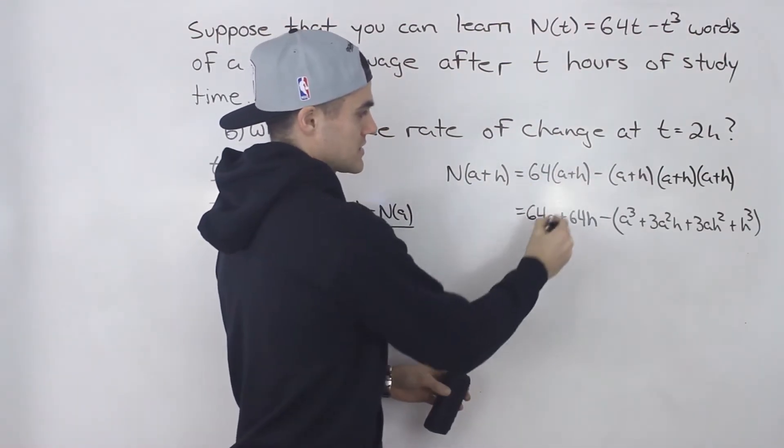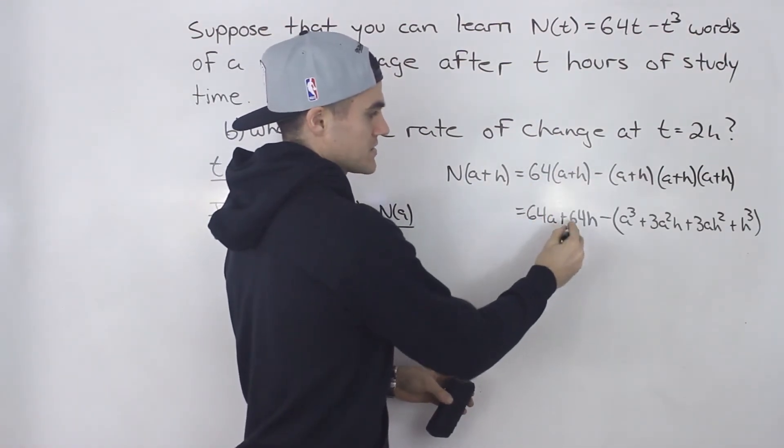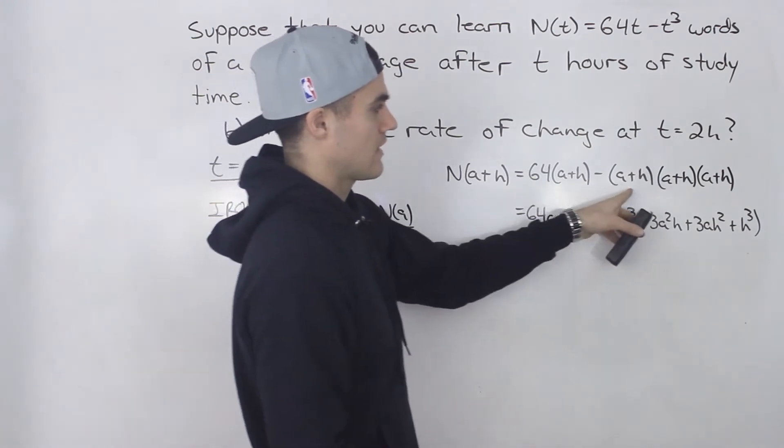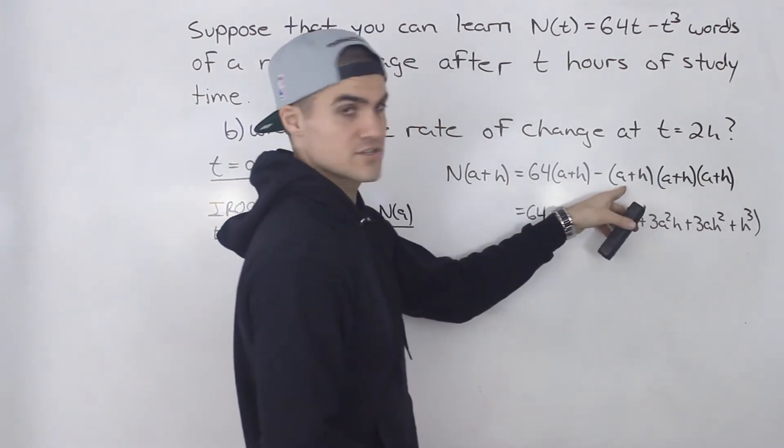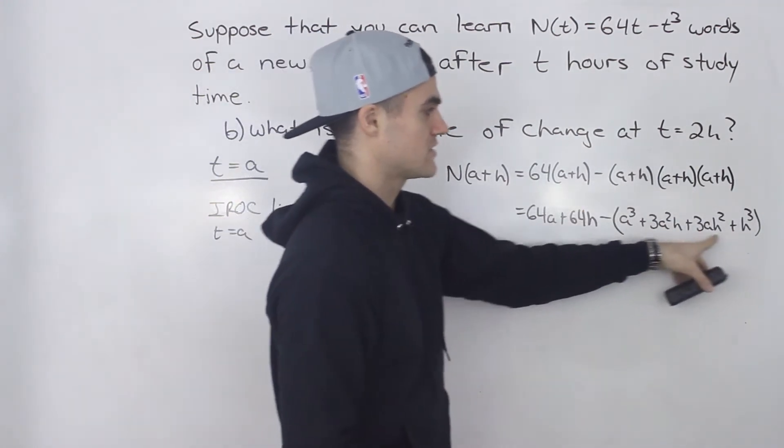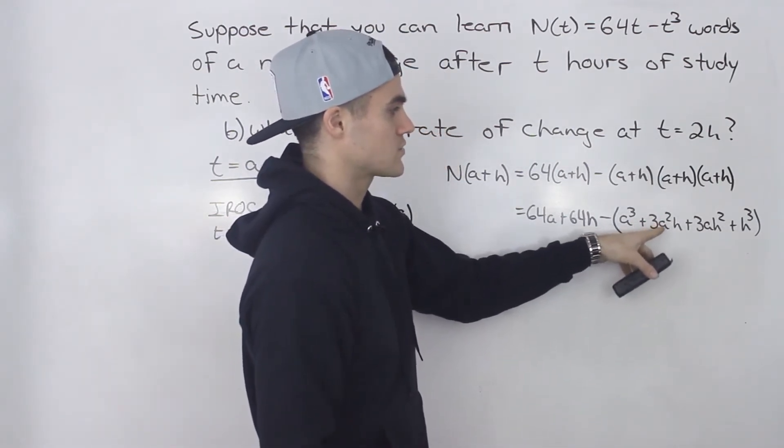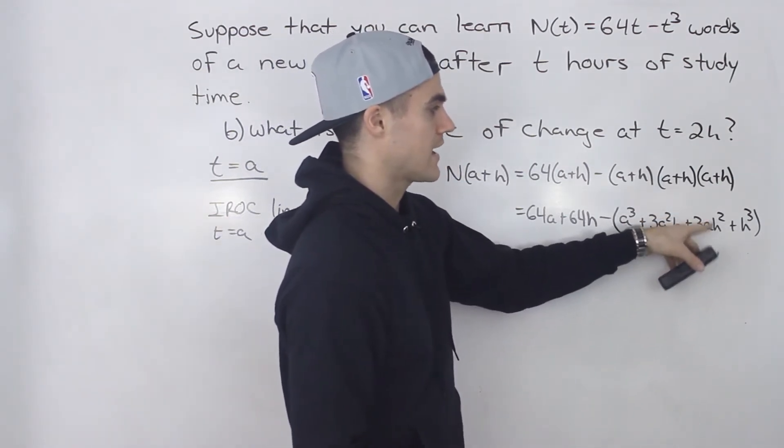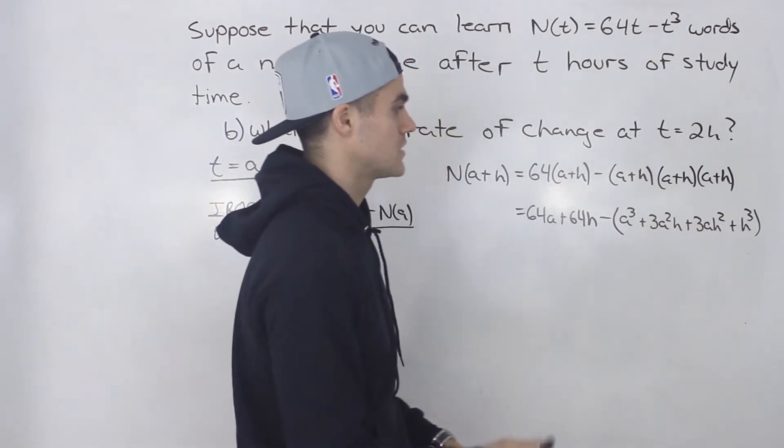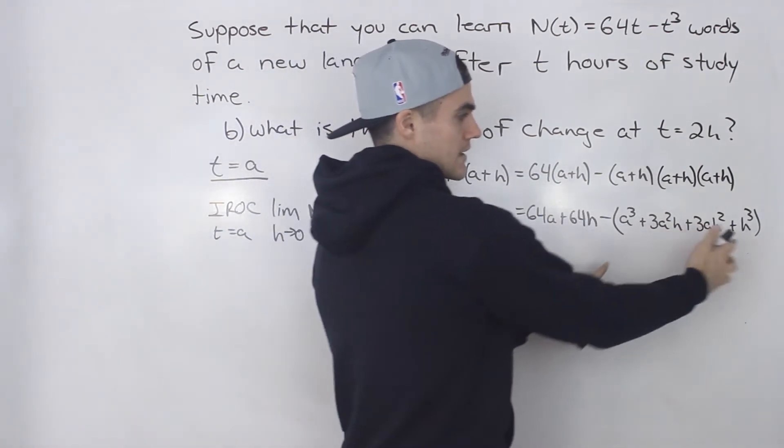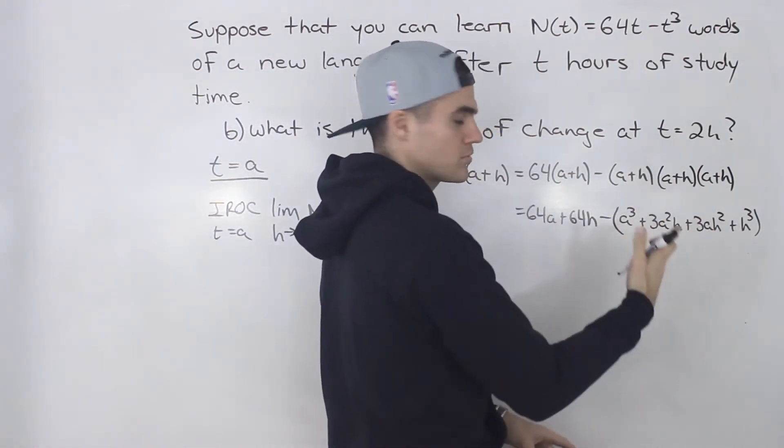So when you do all that, distribute that 64, and you'll have 64a plus 64h. And then when you foil these three brackets out, you'll end up with this expression: a cubed plus 3a squared h plus 3ah squared plus h cubed, and you are subtracting that whole expression. So don't forget to put brackets.